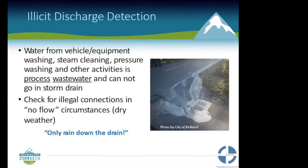Illicit discharges are another concern. Vehicle or equipment washing, steam cleaning, pressure washing, and other processed water activities should not go down the storm drain — they must be separated and go into a sewer system. During the dry season, walk your property and listen for flowing water. There should be no flowing water during the dry season; if you hear it, that could indicate a connection from your building, another property, or the sewer — which could cause major issues.